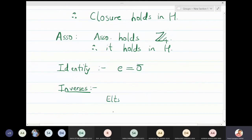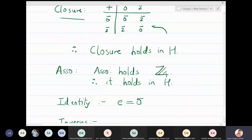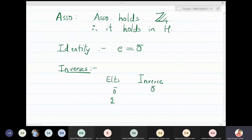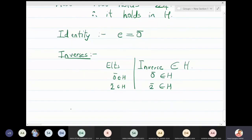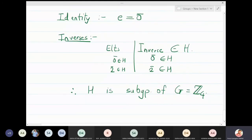The elements of H are 0̄ and 2̄. Are the inverses inside H? From the table, 0̄ has inverse 0̄, and 2̄ has its own inverse 2̄ — both belong to H. Inverses are also elements of H. Therefore all four properties are satisfied and H is a group in itself, but smaller than G. Therefore H = {0̄, 2̄} is a subgroup of G = Z4 with respect to addition.